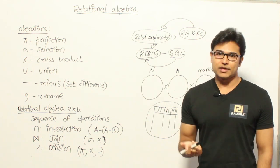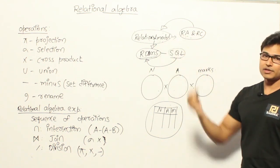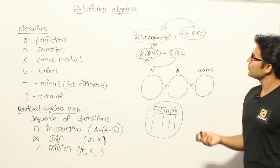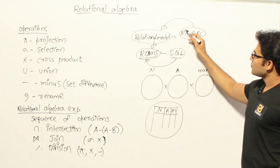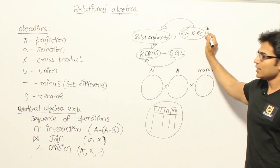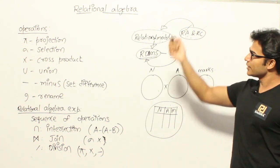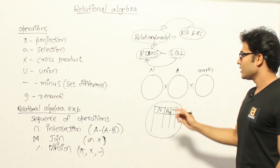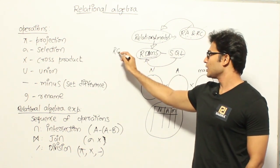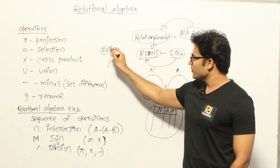Think of it as: relational algebra and relational calculus are the conceptual/theoretical side, and SQL on RDBMS is the practical implementation. Understanding relational algebra and relational calculus will help us understand SQL better, and also for GATE. Relational algebra is more important for GATE compared to relational calculus. These are two theoretical languages that can be applied on the relational model, and we'll look at relational algebra first, then relational calculus.